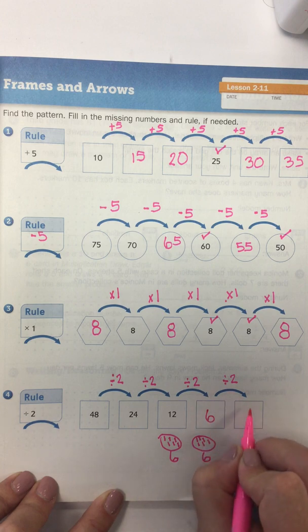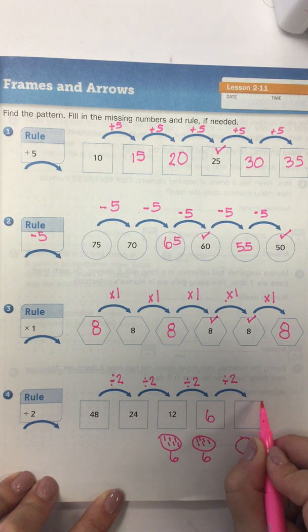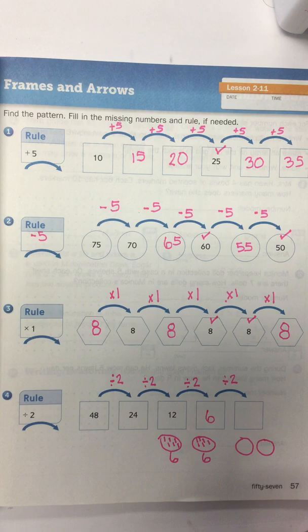And I'm going to do the same thing for my last one. 6 into two equal groups would equal, and I want you to solve and take a picture and send it to me on Seesaw.